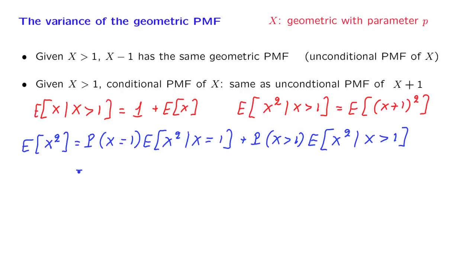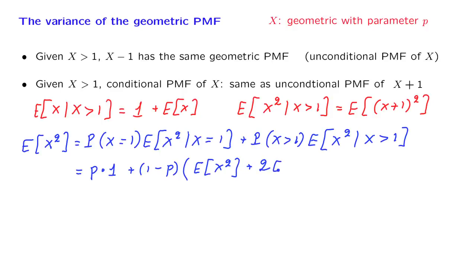The probability that the first toss results in success, that x equals 1, is p. And if x equals 1, then x squared is also equal to 1. Then there is probability 1 minus p that the first trial was not a success. We have this conditional expectation, but it equals the unconditional expectation. Expanding the quadratic gives us the expected value of x squared, plus twice the expected value of x, plus 1.